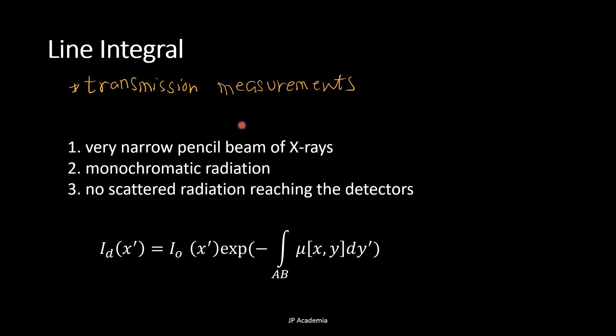The data needed to reconstruct the image or the transmission measurements through the patient using the following assumptions. So first, we have here a very narrow pencil beam of x-rays. Second, a monochromatic radiation with our assumption of the e-bar, the effective energy, and no scattered radiation reaching the detectors.